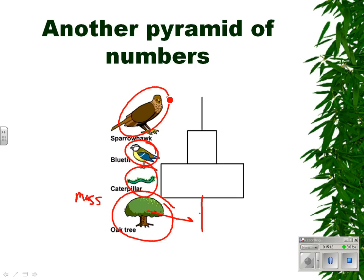To recap: food chains, food webs, and the three kinds of ecological pyramids — pyramid of energy, pyramid of biomass, pyramid of numbers — and the 10% rule.